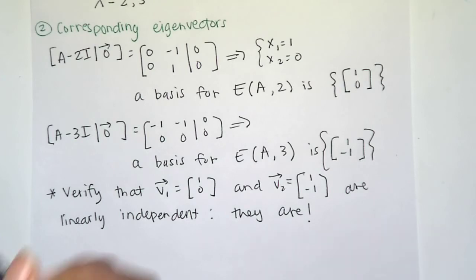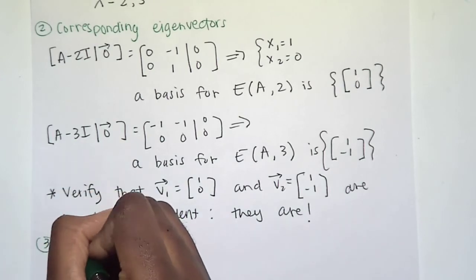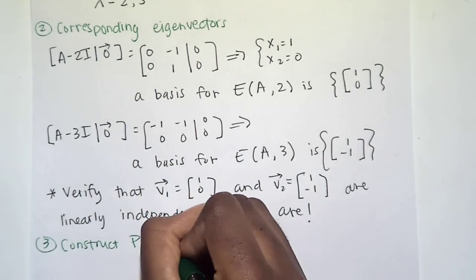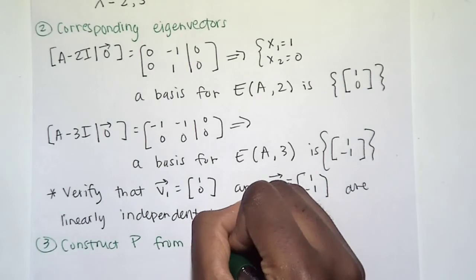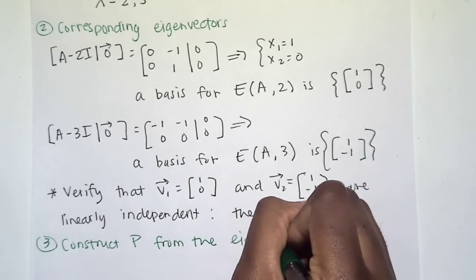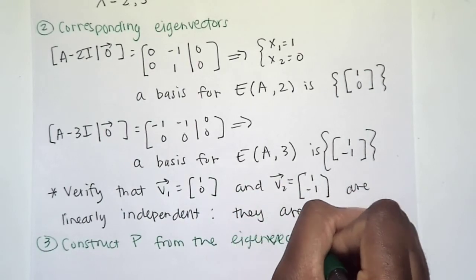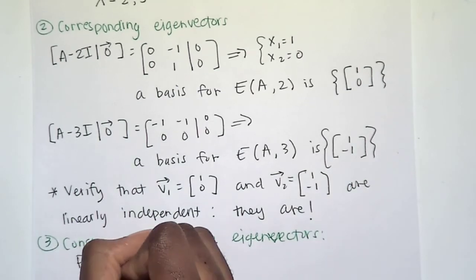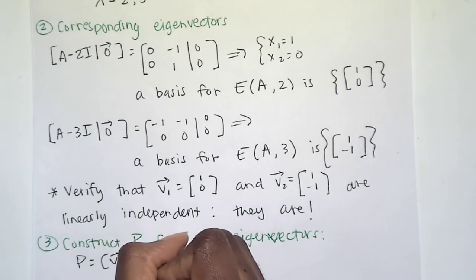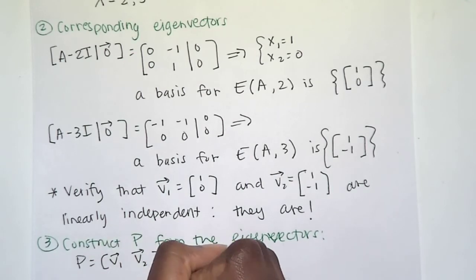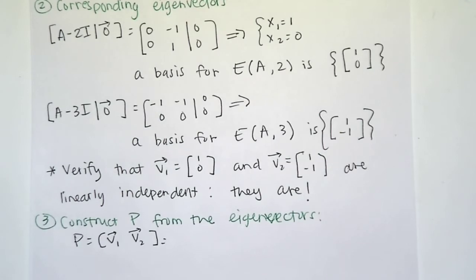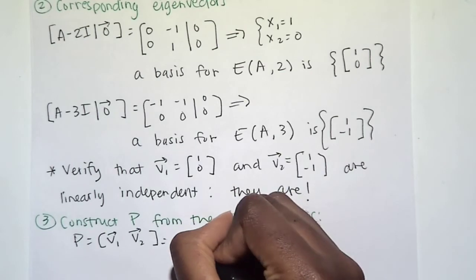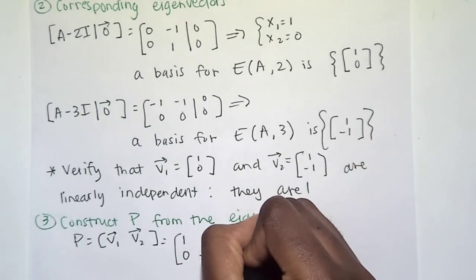So we can use the diagonalization theorem and construct our matrices. Step three is to construct P from the eigenvectors. Remember, our matrix P is just our eigenvectors side by side. So for us, in this problem, P is going to be the matrix [1, 0; 1, negative 1].